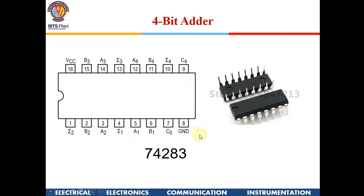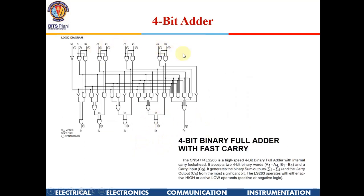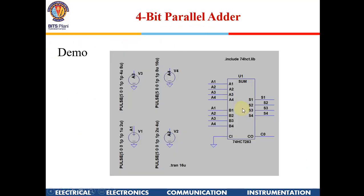Internally, the 74283 is a 4-bit binary full adder with fast carry — it is not a ripple carry adder. These adder topologies will be studied in theory classes, but for now just remember it uses a fast carry topology.